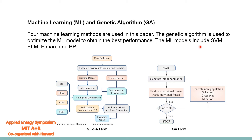The genetic algorithm (GA) is used to optimize the machine learning model to obtain better performance. The machine learning models include SVM, ELM, Elman, and BP. When we get the experimental data, we randomly divide the data into training and validation datasets. The training data is normalized to the range 0 to 1, and the same method is applied to process the testing dataset. Then we choose a model — SVM or BP — build the model, then optimize with GA. After validation and calculation of error, a prediction model is built.